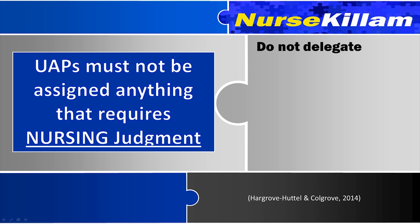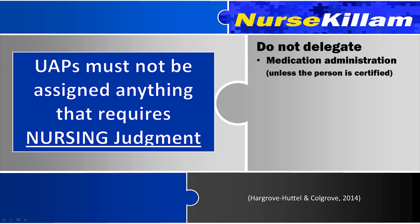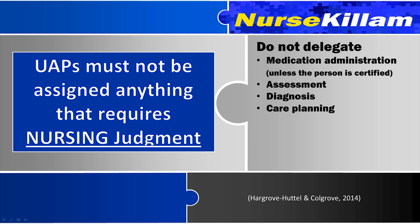For the NCLEX, remember that unlicensed assistive personnel must not be assigned to anything that requires nursing judgment, since they are not nurses. Any activities that involve medication administration, assessment, diagnosis, care planning, education, evaluation, nursing care, or nursing judgment cannot be assigned to a UAP.